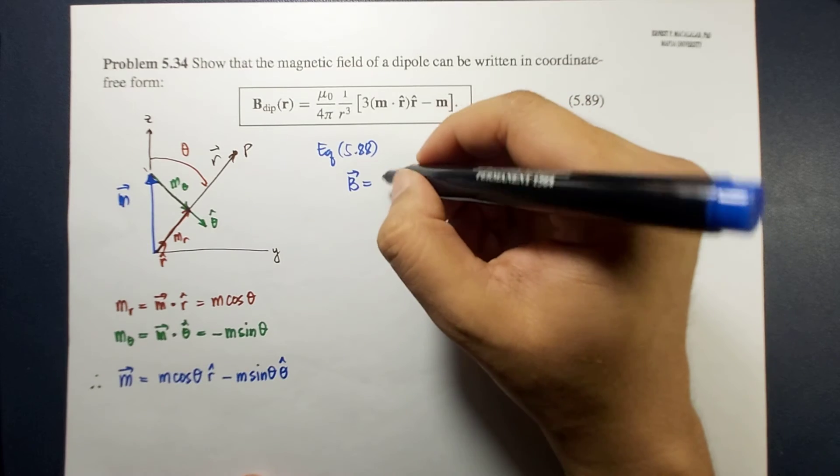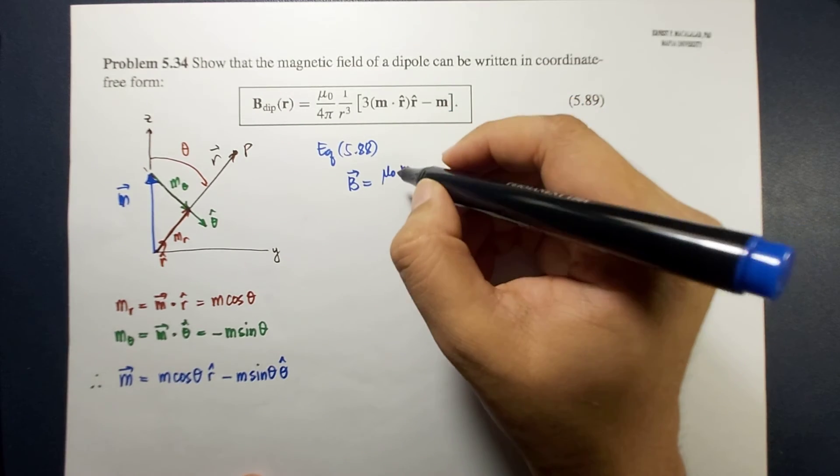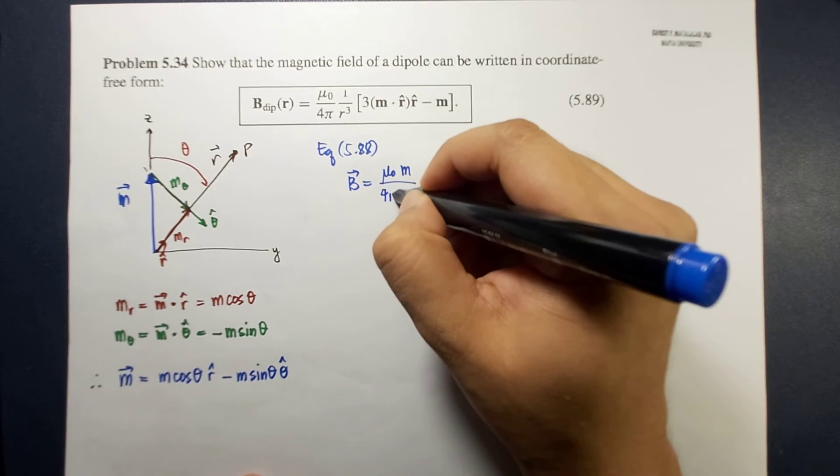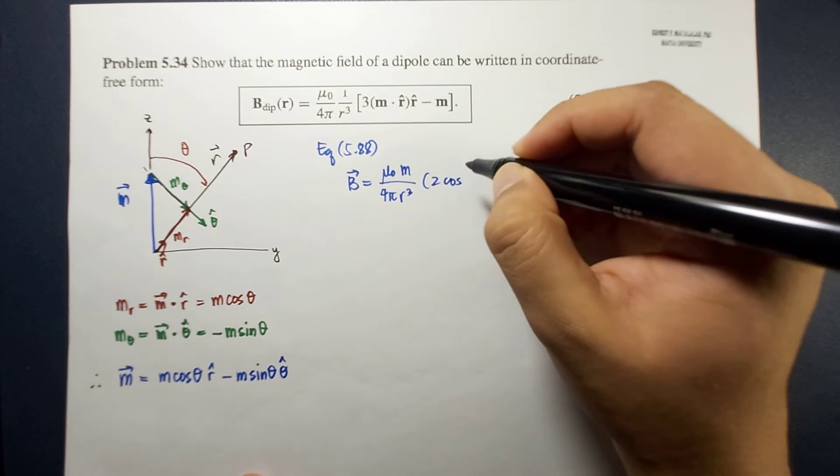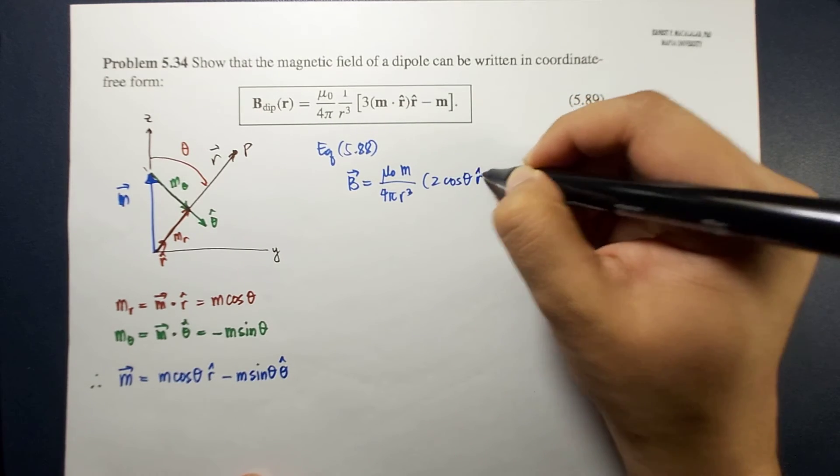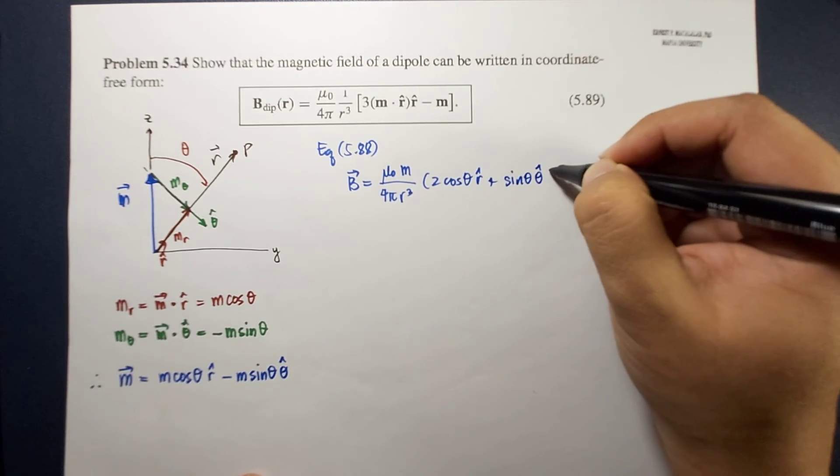is equal to mu naught divided by 4 pi r cubed times 2 cosine theta r hat plus sine theta theta hat.